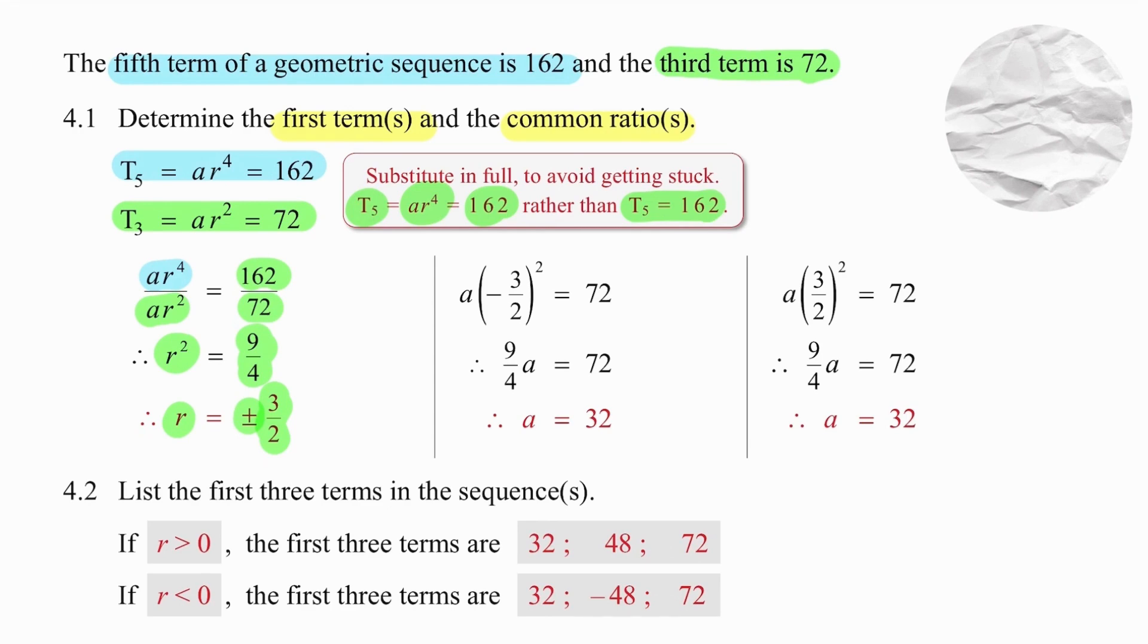Alright, now we have two r values. Because we're squaring to work out the third term, it won't make any difference if we use the negative 3 over 2 or the positive 3 over 2. We will in fact both times get the same a value of 32. So both sequences will start with a positive a value of 32, but we can generate one sequence with a positive ratio and one sequence with a negative ratio.